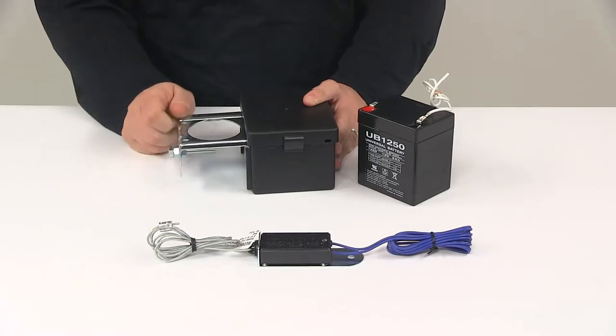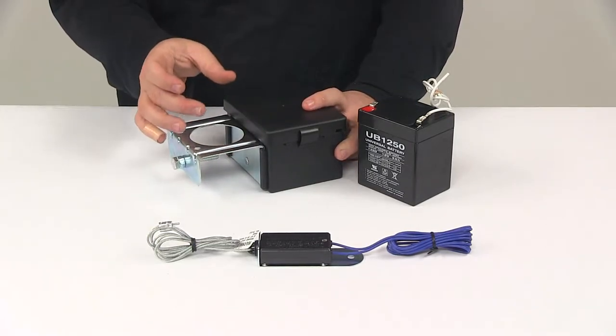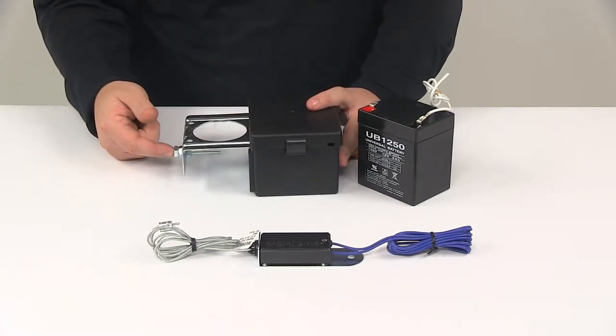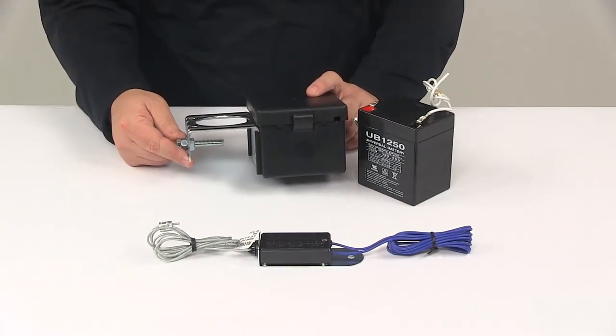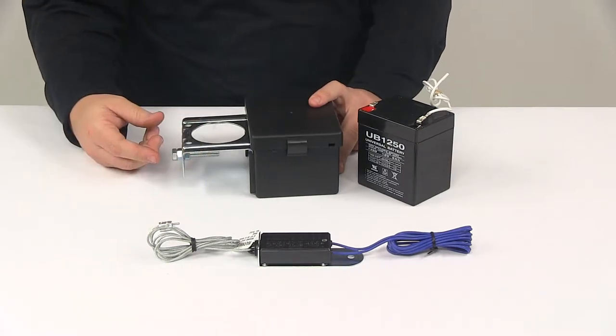The unit simply clamps onto your trailer frame or around the tubing of your jack. It does come with the hardware to get that installed. You could also use that to weld it to your trailer frame if you choose to do so.